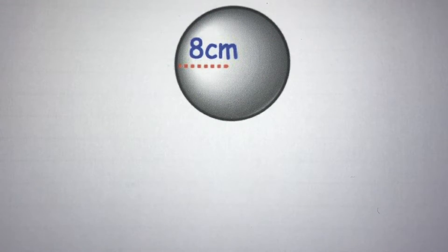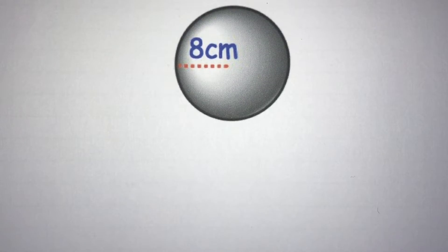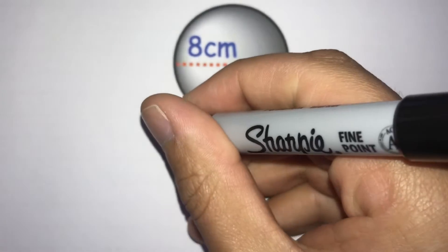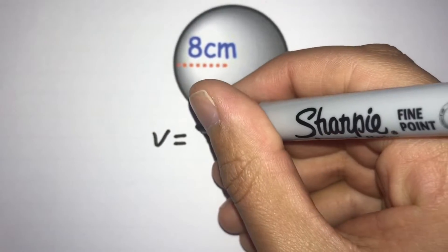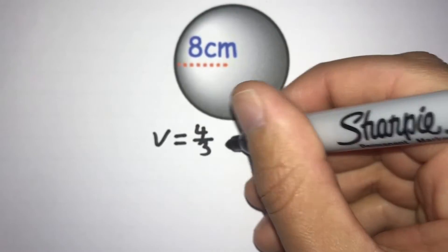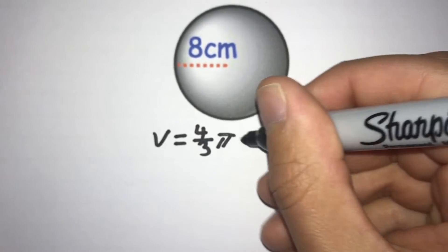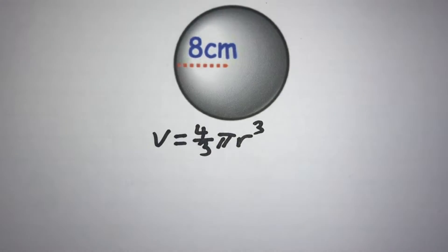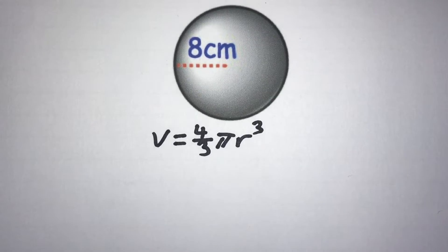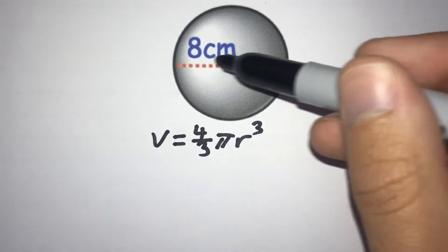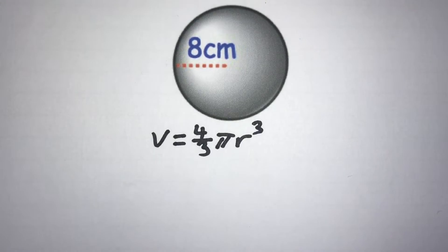In this video we're looking at the volume of a sphere and the key thing we need to remember is its formula. The formula for the volume of a sphere is: Volume = (4/3) × π × r³, where r is the radius of the sphere — that's the distance from the centre out to the edge.